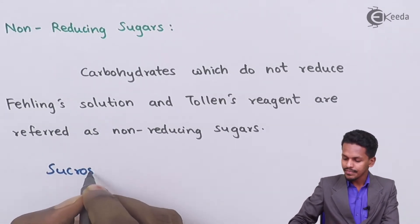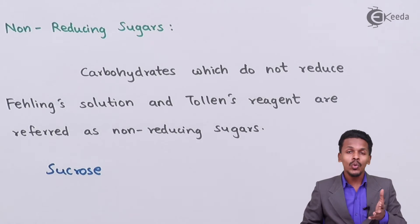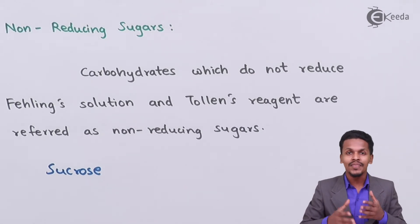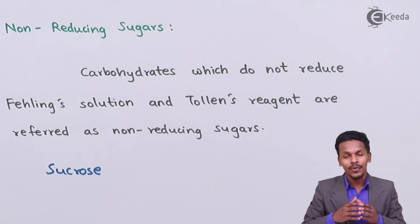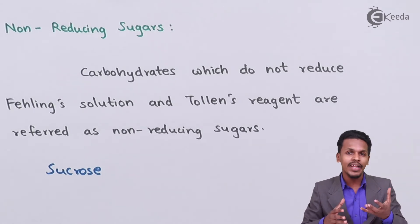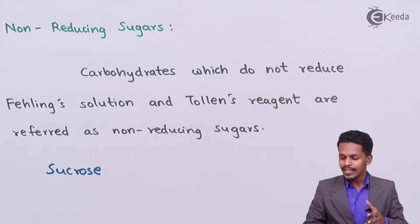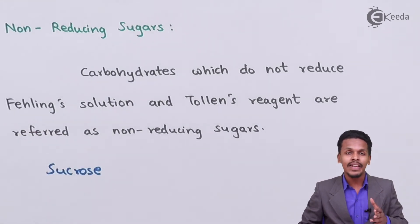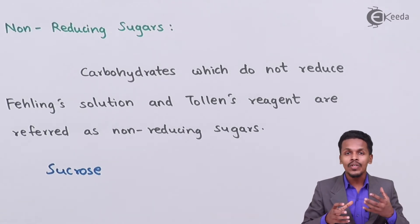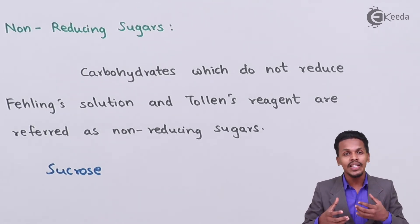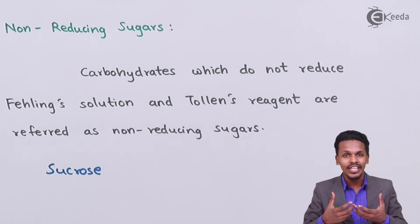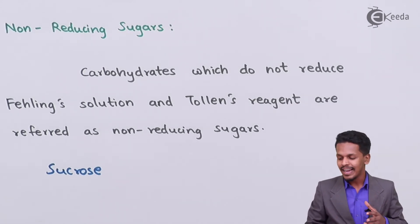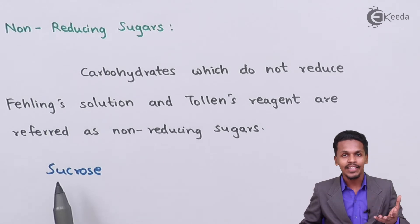For example, sucrose is a molecule formed from glucose and fructose — on hydrolysis of sucrose we get glucose as well as fructose. If glucose and fructose individually give a positive test, why doesn't sucrose? The reason is that when sucrose is formed from fructose and glucose, the free carbonyl groups of both molecules are joined to each other, resulting in no availability of a free carbonyl group. That is why sucrose does not give a positive test for Fehling's solution or Tollens' reagent, and is considered a non-reducing sugar.